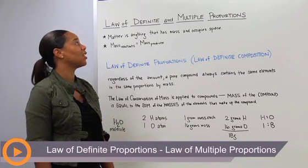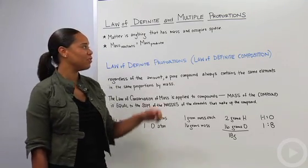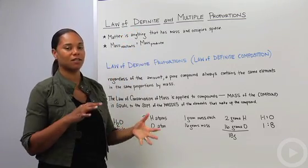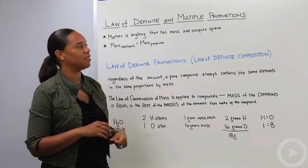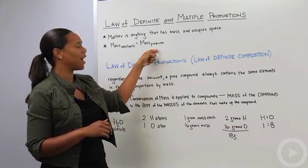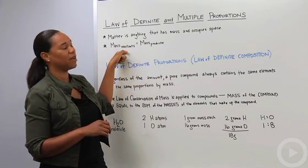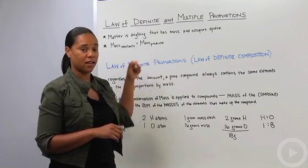In this segment, let's discuss the law of definite and multiple proportions. But before we do that, let's have a quick review briefly just to remind us of why this is important. We need to remember that matter is anything that occupies space and has mass. Also, the law of conservation of mass tells us that the mass of the reactants equals the mass of the products because matter is neither created nor destroyed.